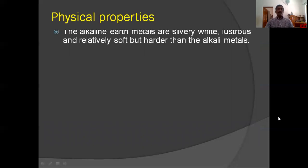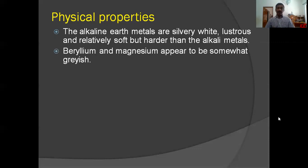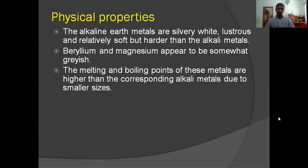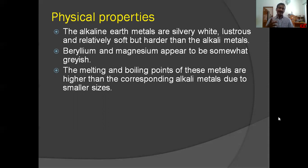Physical properties: the alkaline earth metals are silvery white, lustrous and relatively soft, but harder than the alkaline metals. Their atomic size decreases and because of the release of two electrons they are harder than alkaline metals. The melting and boiling points of these metals are higher than the corresponding alkaline metals due to smaller size. Two electrons are released from each metal in the metal lattice, giving a higher charge metal ion.